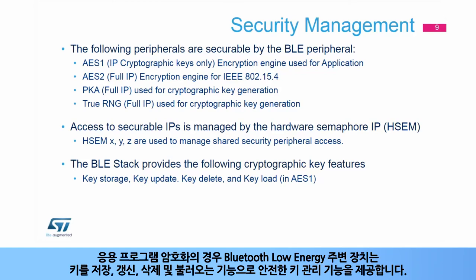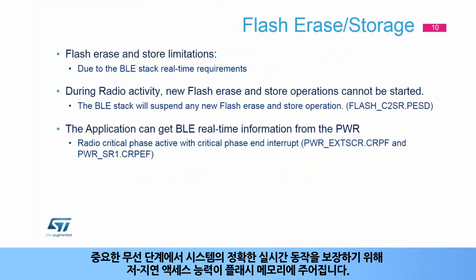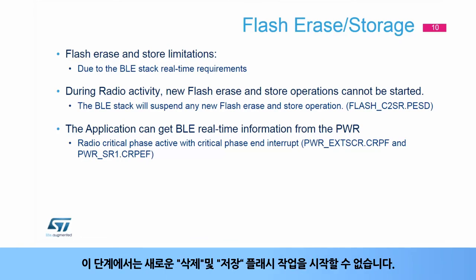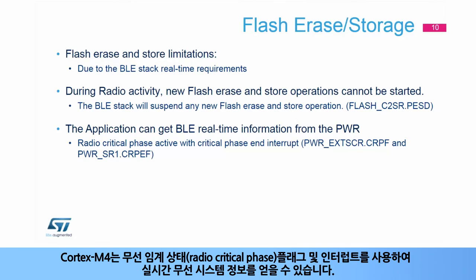For application cryptography, the Bluetooth Low Energy peripheral provides secure key management with features to store, update, delete, and load keys. To guarantee correct real-time operation of the radio system during critical radio phases, low-latency access is granted to the flash memory. During this phase, it is not possible to initiate new erase and store flash options. The Cortex-M4 can obtain real-time radio system information using the radio critical phase flag and interrupt.